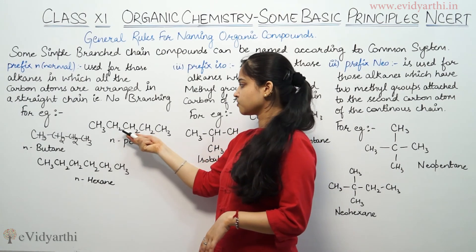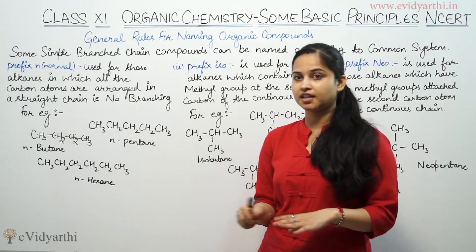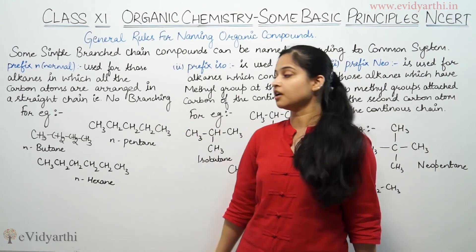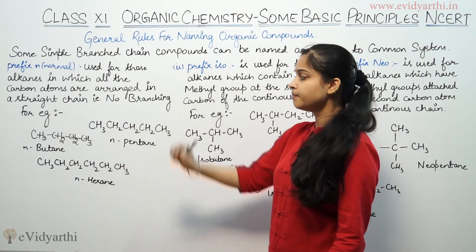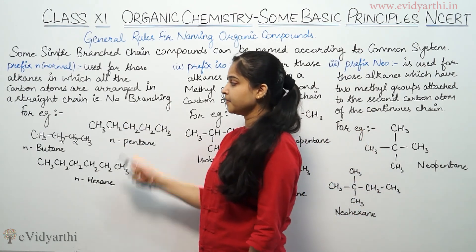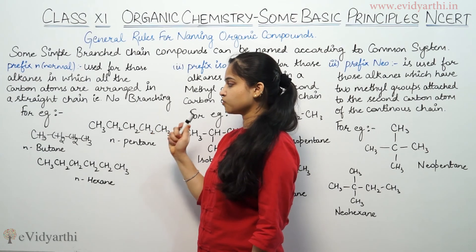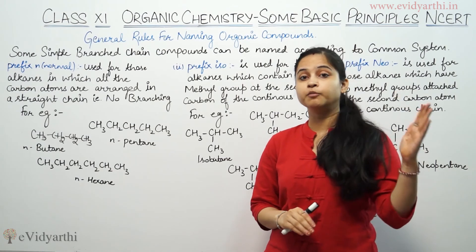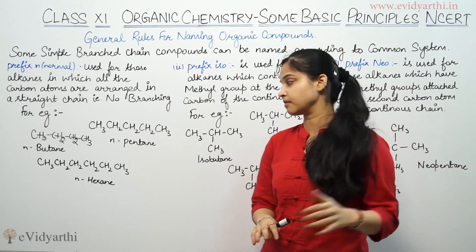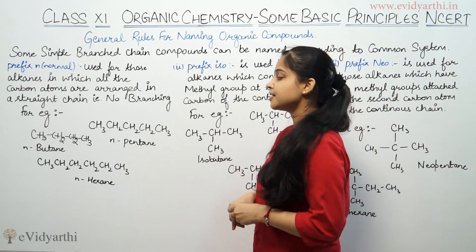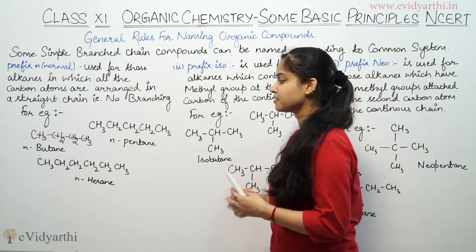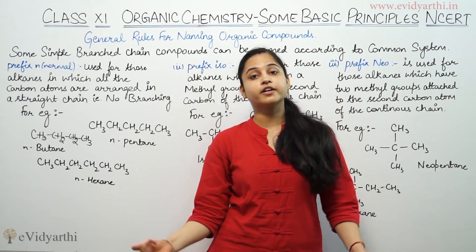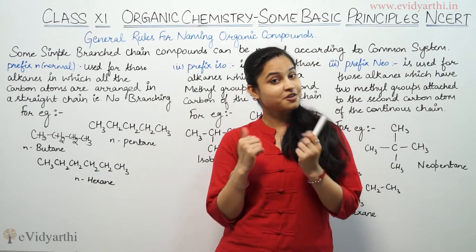N-pentane is CH3-CH2-CH2-CH2-CH3. We will write it as N-pentane in the common name system. Now N-hexane: CH3-CH2-CH2-CH2-CH2-CH3 — six carbon atoms in this chain. So it will be N-hexane, having no branching.